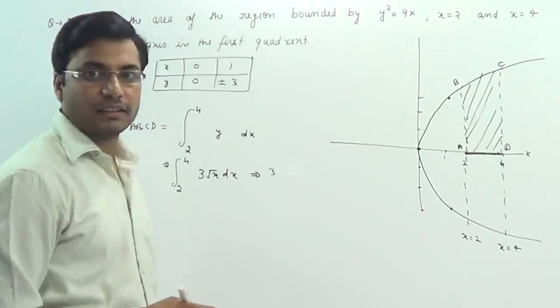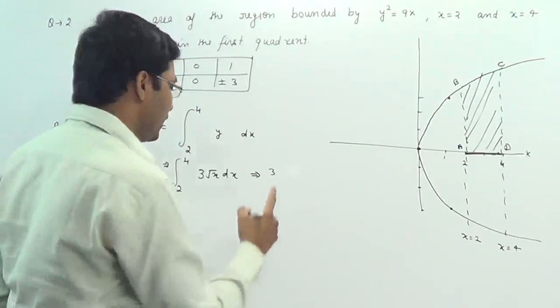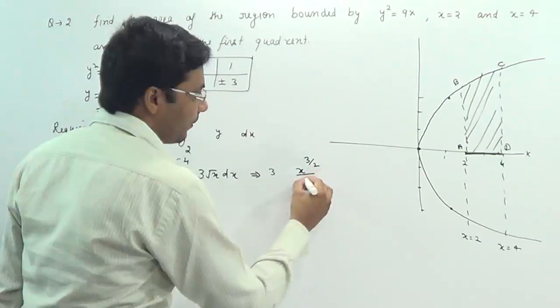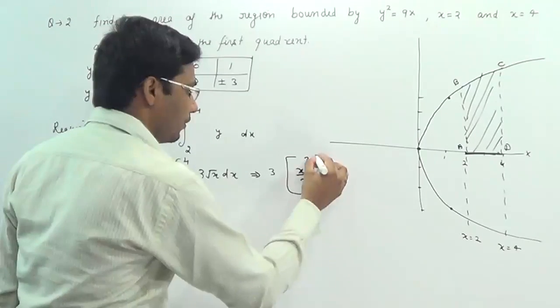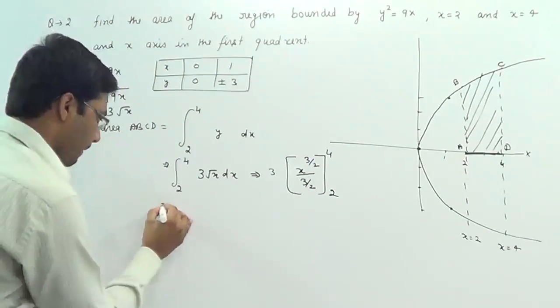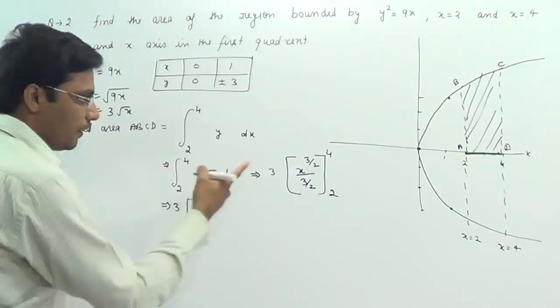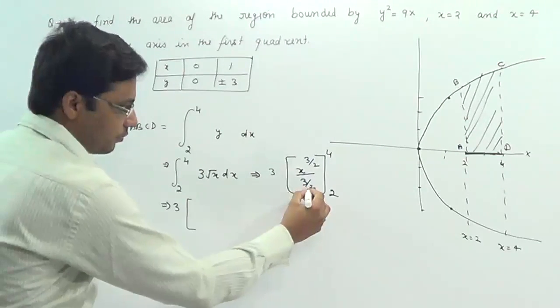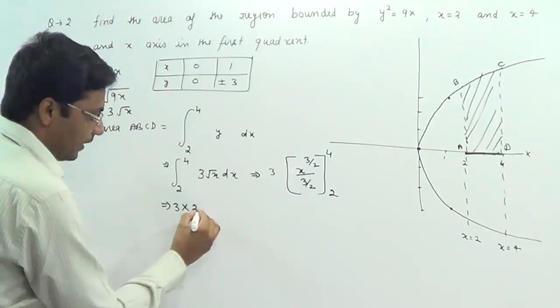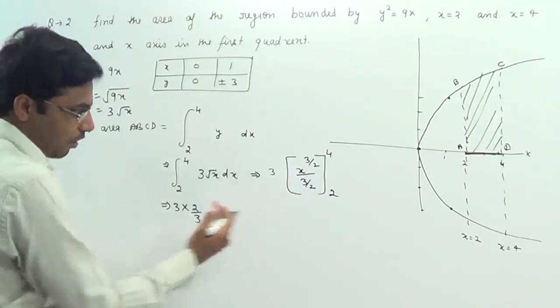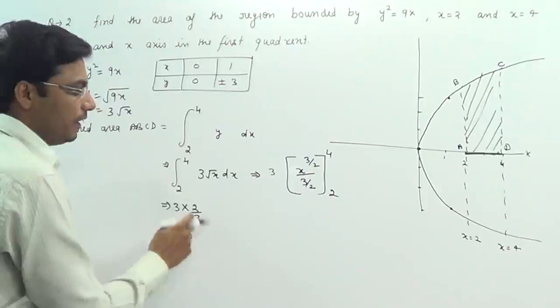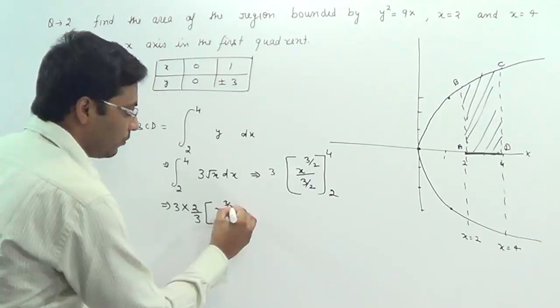Now integrate it. The integration of √x, as I taught in the previous question, is x^(3/2) divided by 3/2. Taking 3 and 2/3 outside the bracket, this 2 will move to the numerator, so we get 2 by 3, which gives us 2 by 3 times x^(3/2).